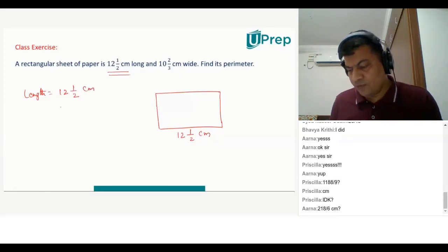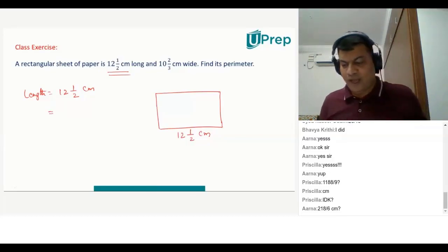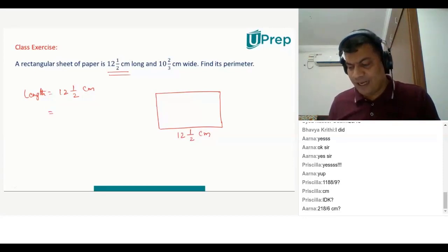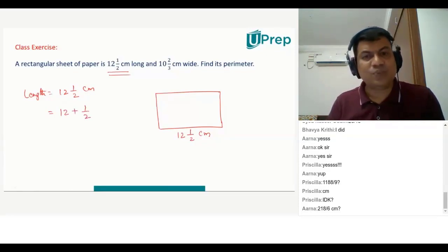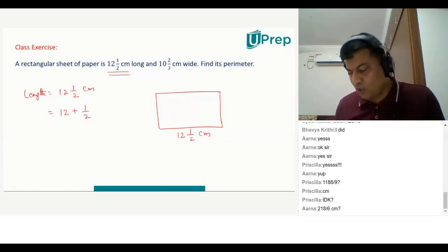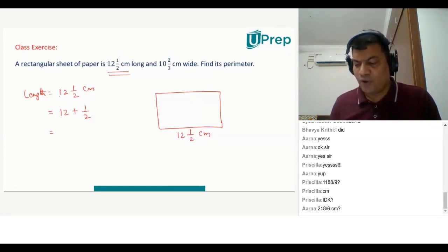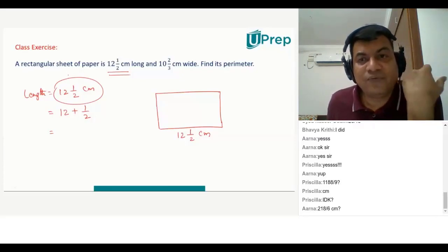Now, what do you mean by 12 and 1 by 2 centimeters? Basically, we need to calculate the value of 12 and 1 by 2. So, 12 and 1 by 2 is nothing but 12 plus 1 by 2. Your denominator should be the same. This is another way of how do you convert a mixed fraction.